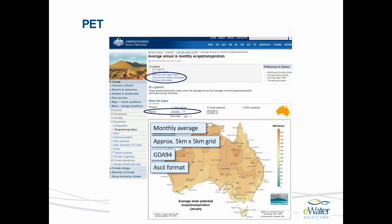Evapotranspiration data, on the other hand, is made available as a monthly average. It is also available as a 5km by 5km grid, so it overlays the rainfall grids, again in GDA94 Geographic Coordinate System and in ASCII format.